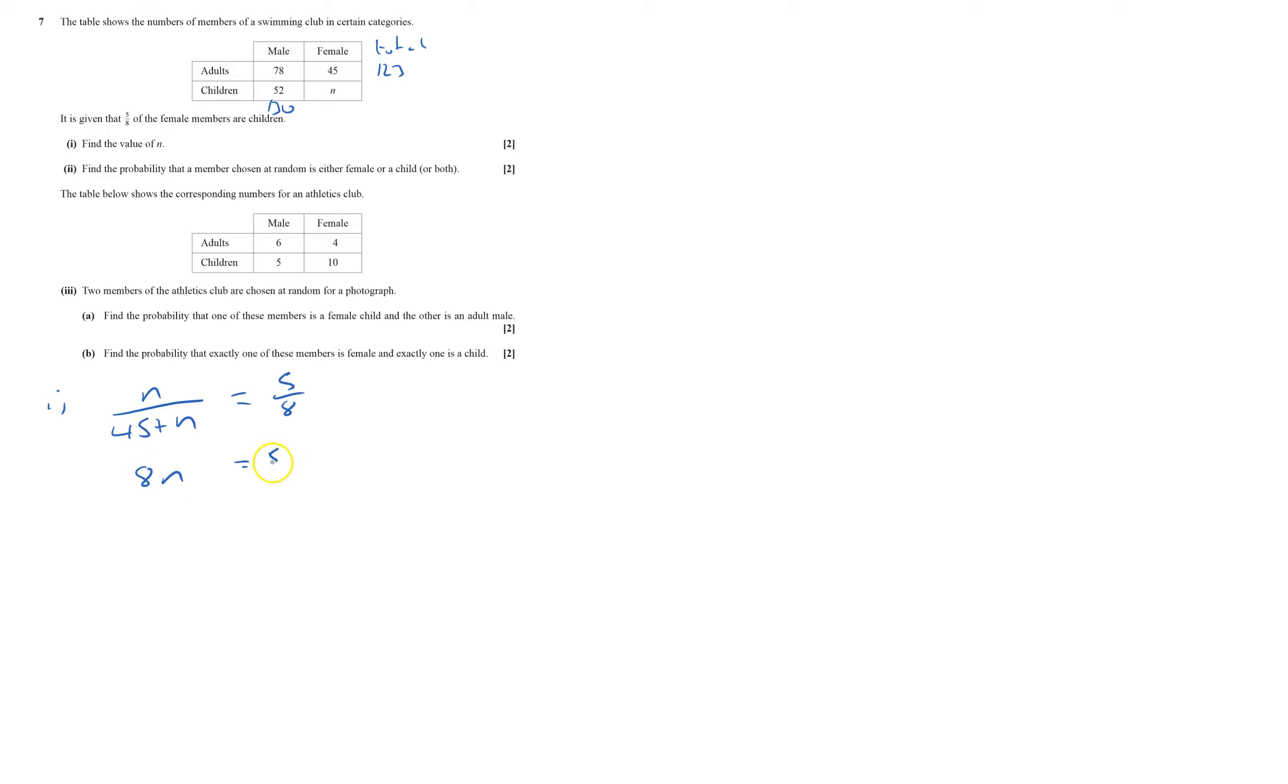That gives me 8N equals 5 times 45 plus N. That's 5N, taking away, 3N equals 5 times 45, which is 225. So N equals 75.